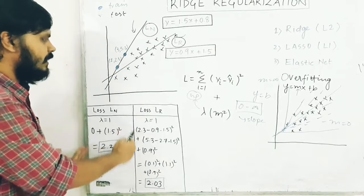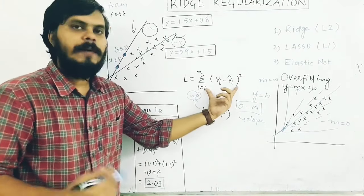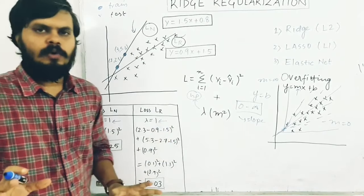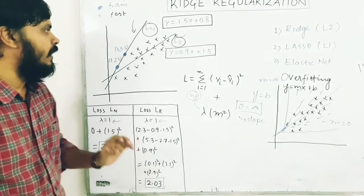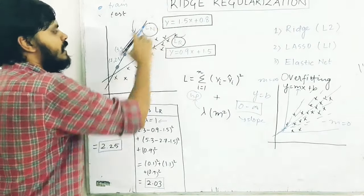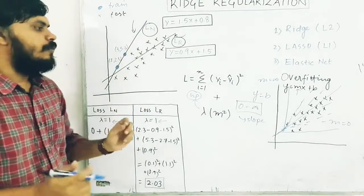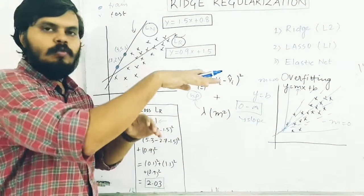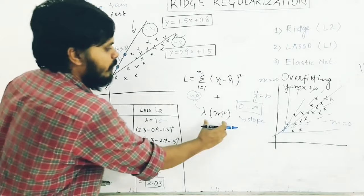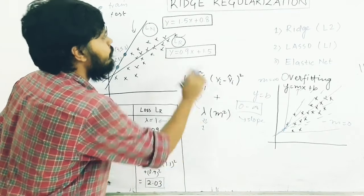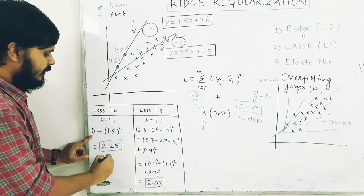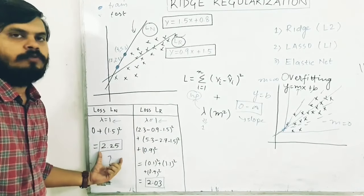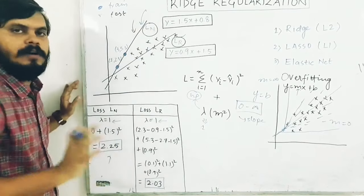Let's calculate it for the first line. There are two components: first, residual error, and second, lambda multiplied by m squared. We'll keep lambda equal to 1. You can easily see that if this line passes through both points, then obviously the residual term would be zero because y predicted and y actual have no difference for both points. Now let's talk about the regularization term: lambda is equal to 1, and m for this one is 1.5, so I have 1.5 squared equals 2.25. So on this training data, after adding the regularization term, my loss is 2.25.